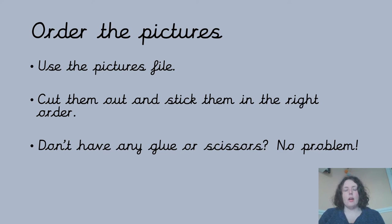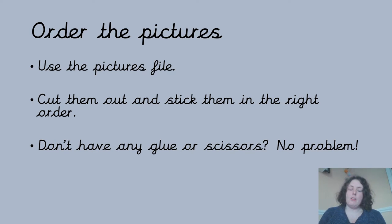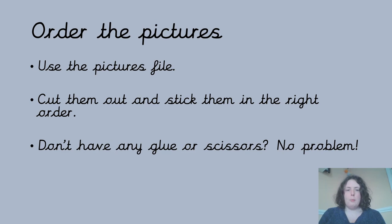You should have been sent a file with some pictures from the story. Unfortunately, all the pictures are in the wrong order, so you need scissors and some glue. Cut the pictures out and stick them on another sheet of paper in the right order. If you don't have scissors or glue at home, don't panic — you can put numbers next to the pictures instead. Write number one next to the first picture, number two next to the second, all the way up to number eight, which will be the last picture.